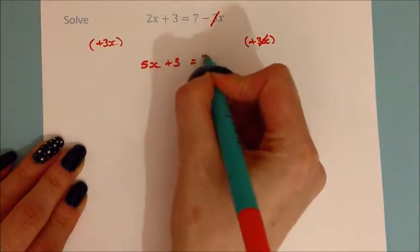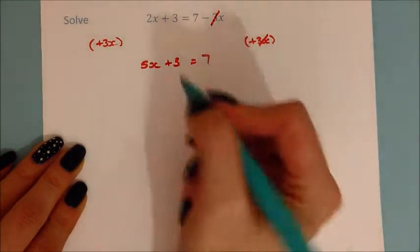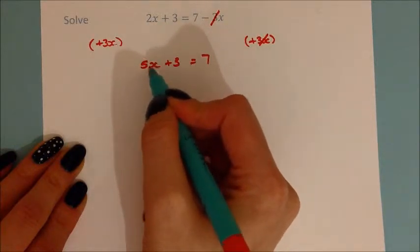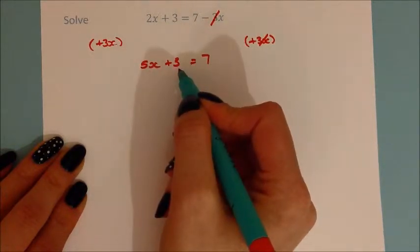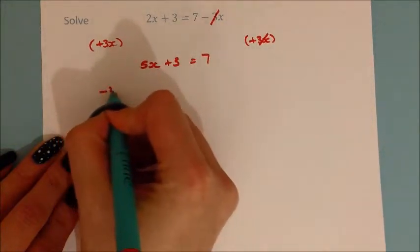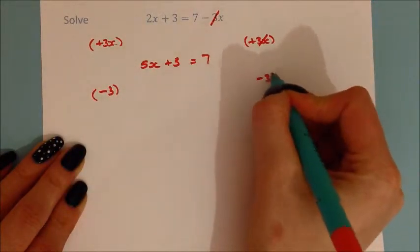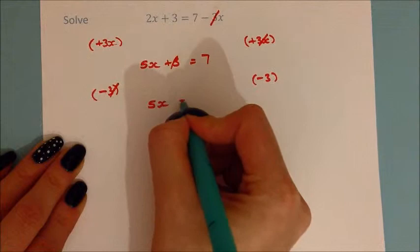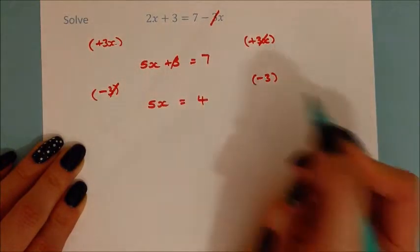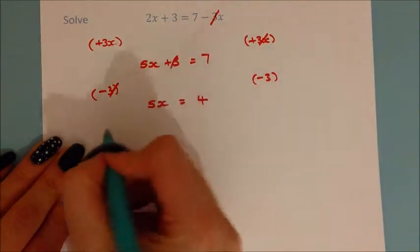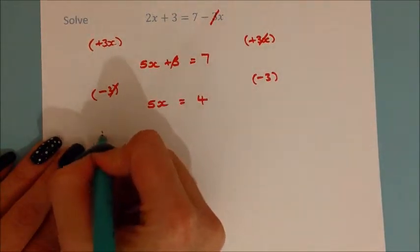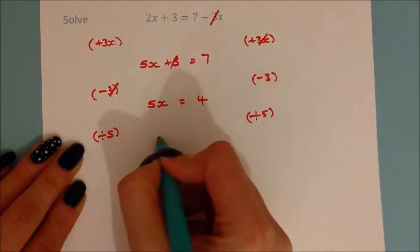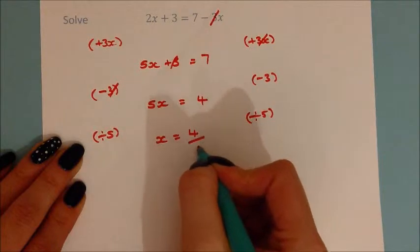We've now got a two-step equation: 5x plus 3 equals 7. The last thing was add 3, so we take away 3 from both sides — that cancels, leaving 5x equals 4. We still want x on its own, so we divide by 5, and we get x equals 4 fifths. It's important pupils realise it's okay to get a non-whole or negative answer.